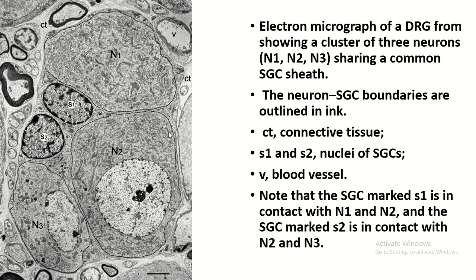This is an electron microscopy picture of the dorsal root ganglia. You see this is the cell body of the sensory neuron with a lightly stained nucleus with prominent nucleolus. This is another cell body of the sensory neuron with its nucleus. Here, another cell body is shown where the nucleus is not present because it was cut in this region. These are the nuclei of two satellite cells — you see the darkly stained nuclei. This is a blood vessel and this is the connective tissue.